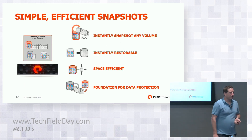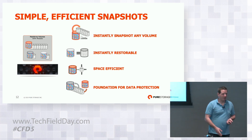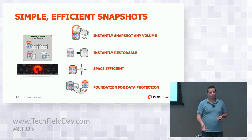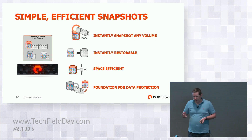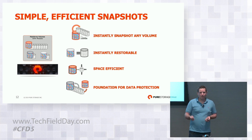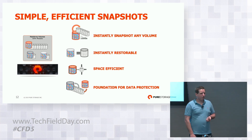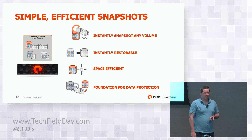CloudSnap is based on the snapshotting system of the Flash Array itself, and we are really proud of the snapshotting system. You can take snapshots of any volume at any given time and restore any snapshot back to a volume at any given time. They are instantaneous — both the restore and the snapshot taking. They are extremely space efficient and the foundational capability for literally everything we do in our data protection system. Async replication is deeply integrated into the snapshotting system. Active cluster, or synchronous replication, is built on our snapshotting system, and CloudSnap and Snap.NFS are built based on this foundation.